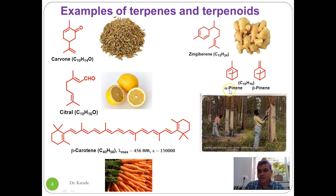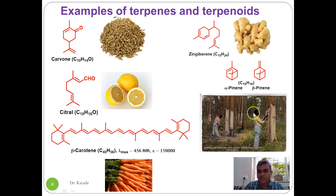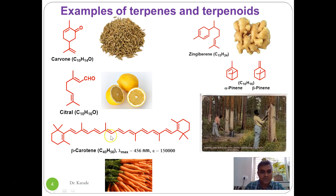Alpha-pinene and beta-pinene are both bicyclic structures and have historical importance. In ancient times, people extracted resins from pine trees in African jungles. Distillation of these pine tree resins yielded a chemical called turpentine, and turpentine contains alpha-pinene and beta-pinene as major constituents. Because of turpentine oil, the words terpenes and terpenoids are derived.